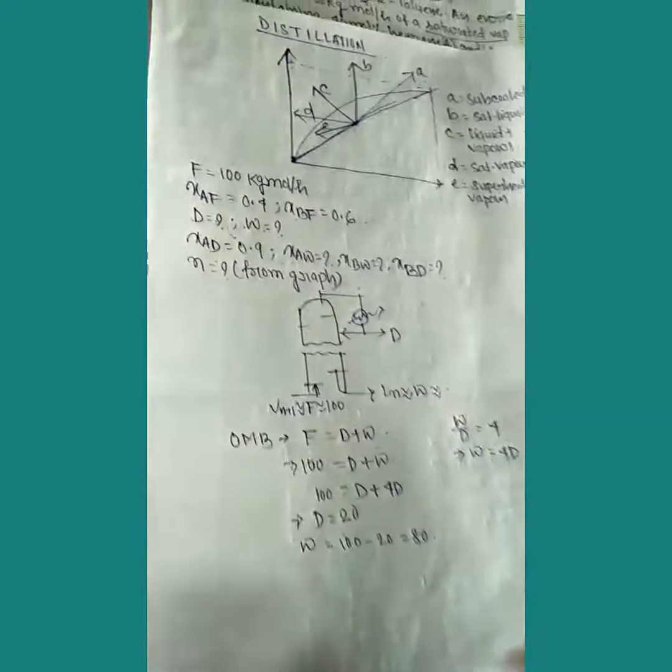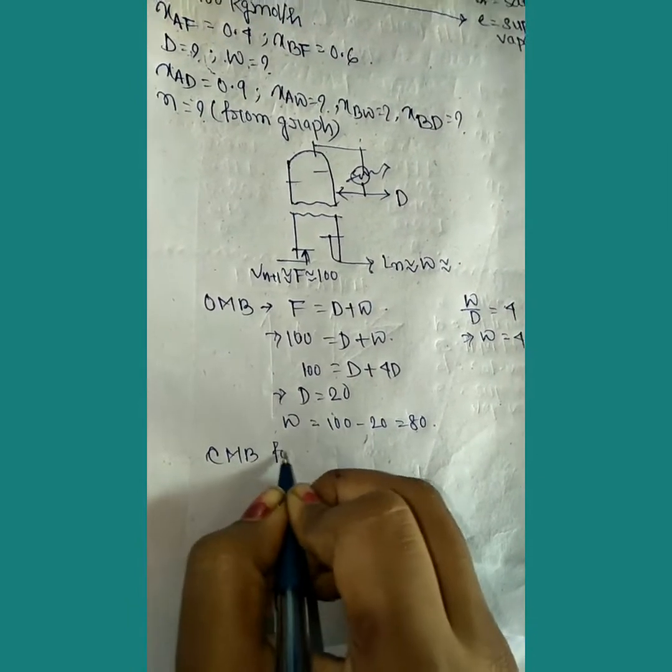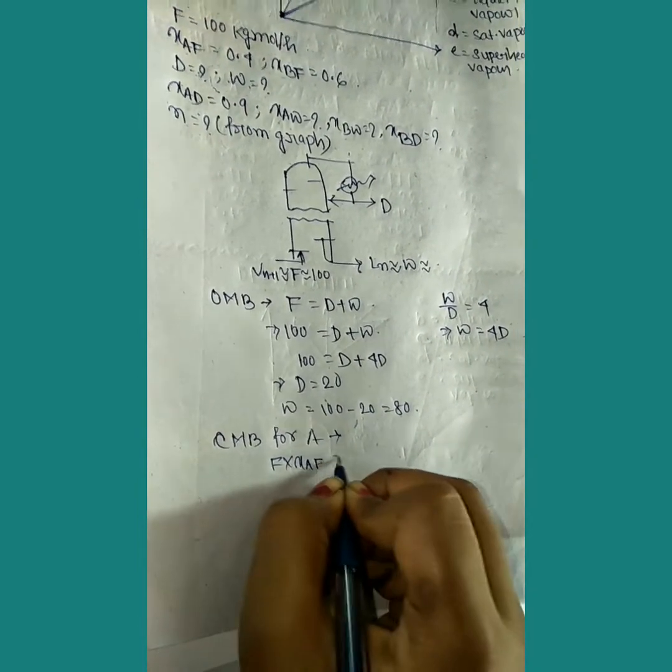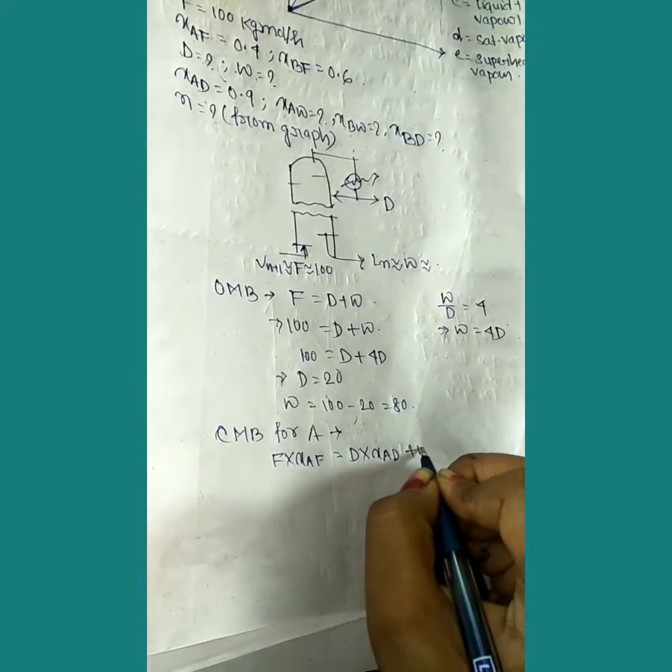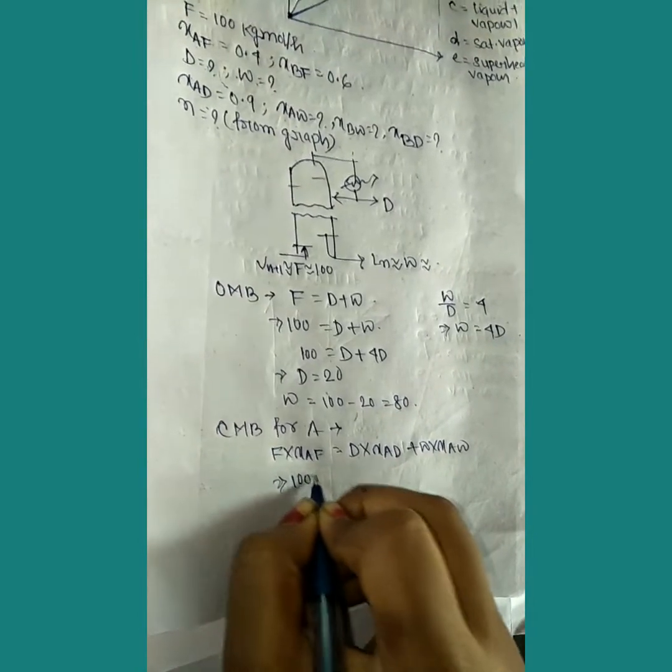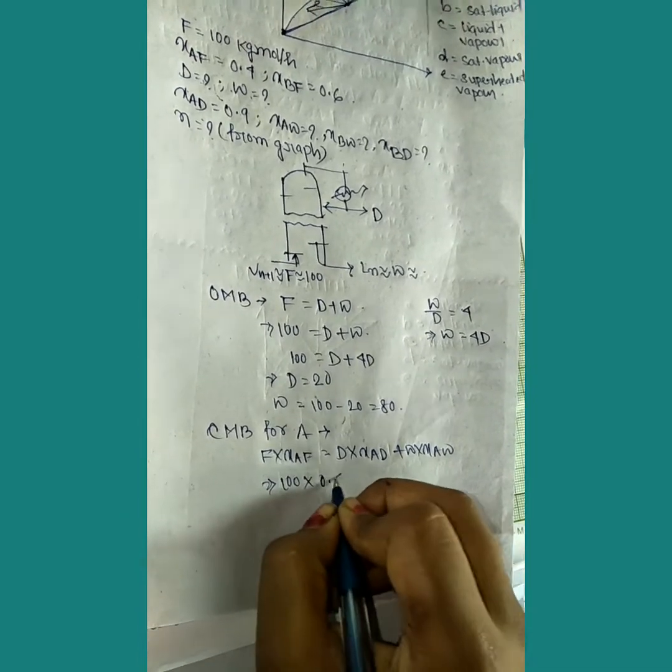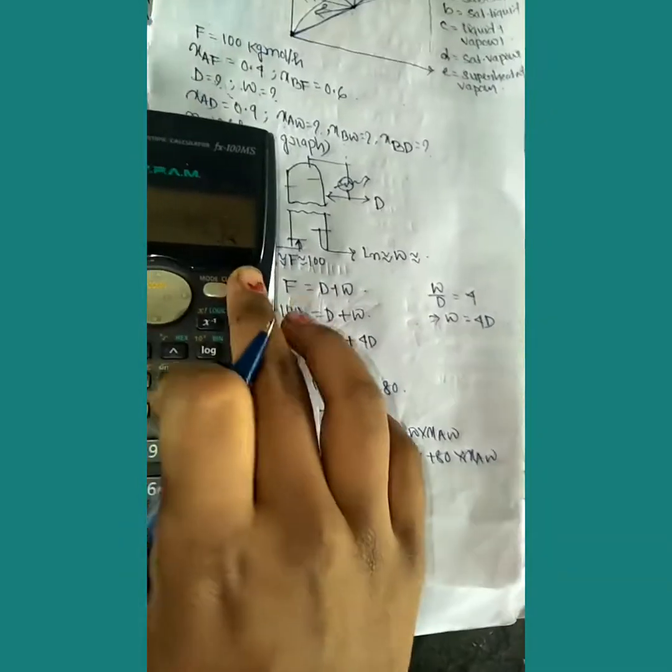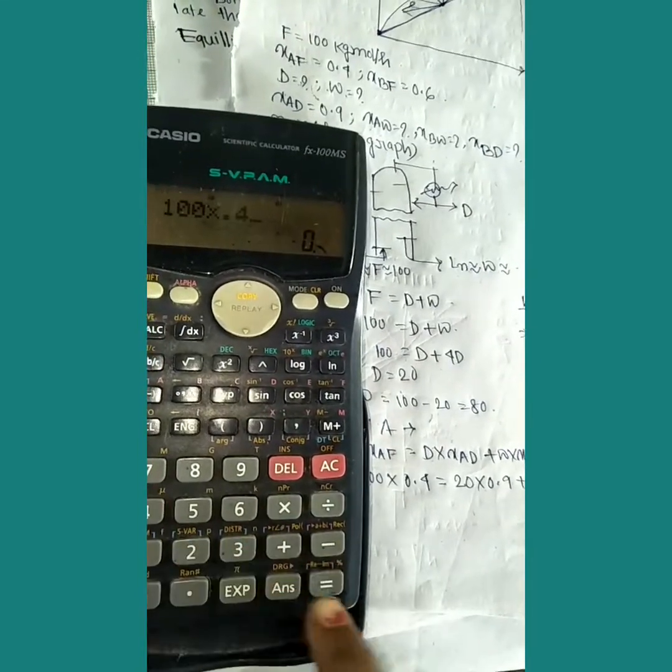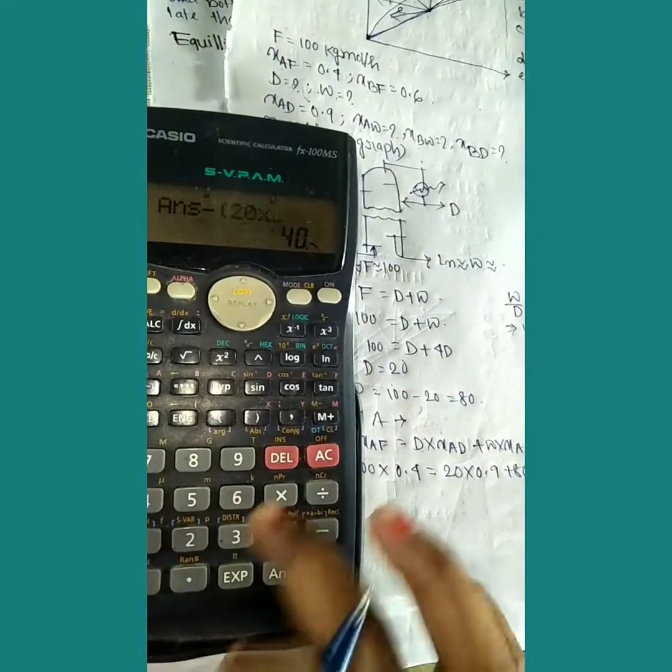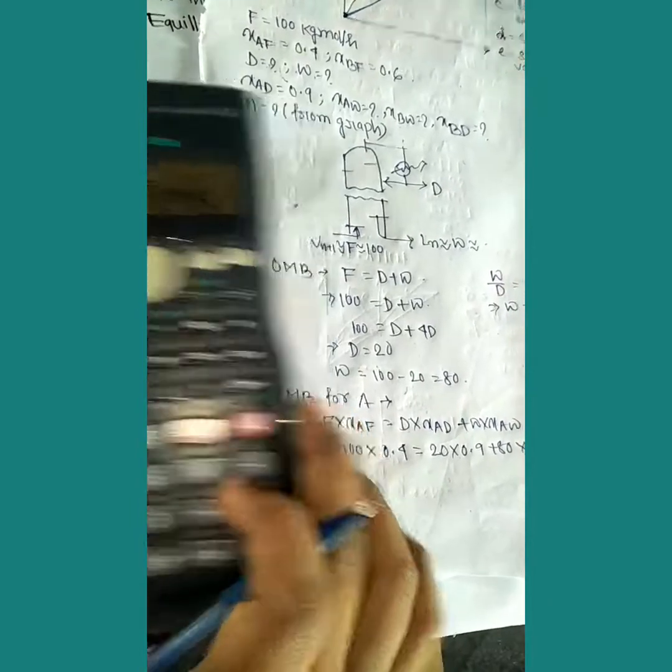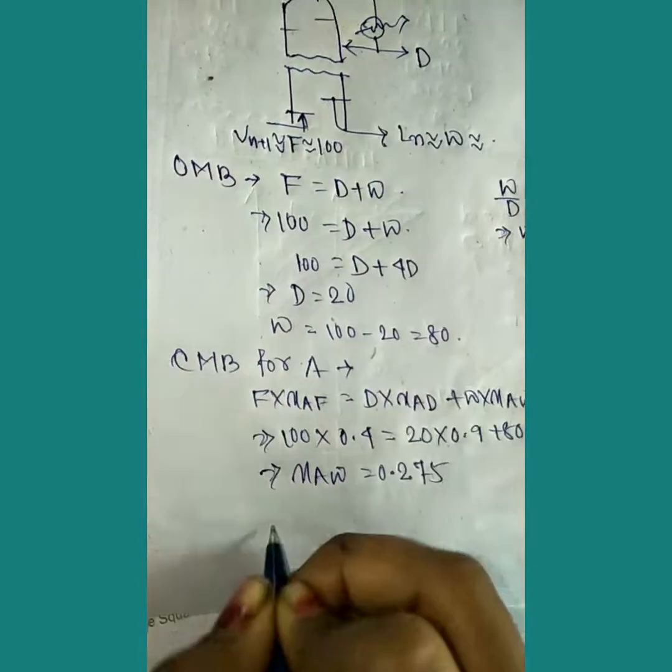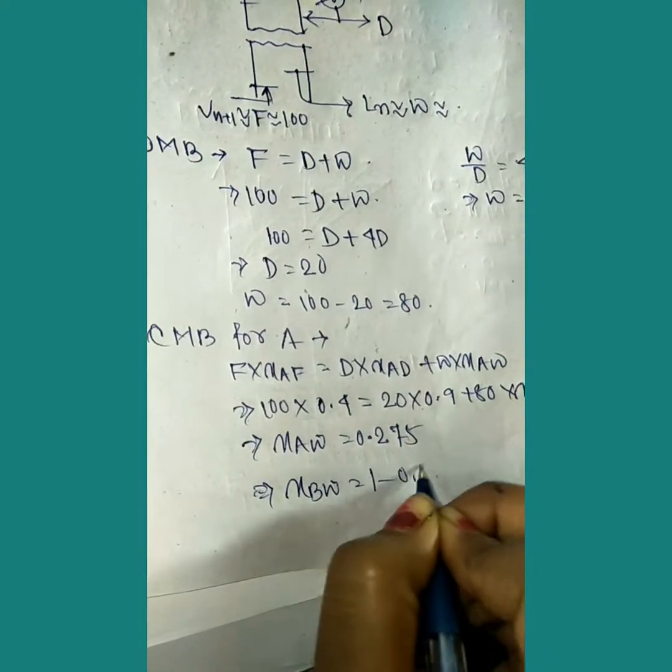Now our aim is to find xbw, xbd. Let's do component material balance for component A. F times xaf equals D times xad plus W times xaw. Substituting values: 100 times 0.4 equals 20 times 0.9 plus 80 times xaw.